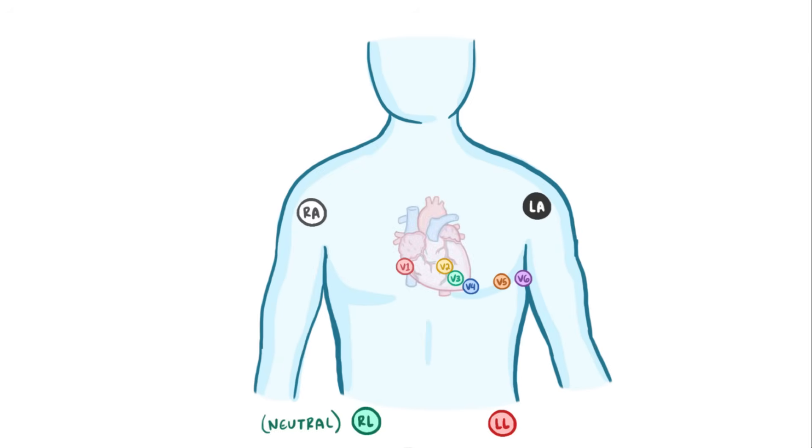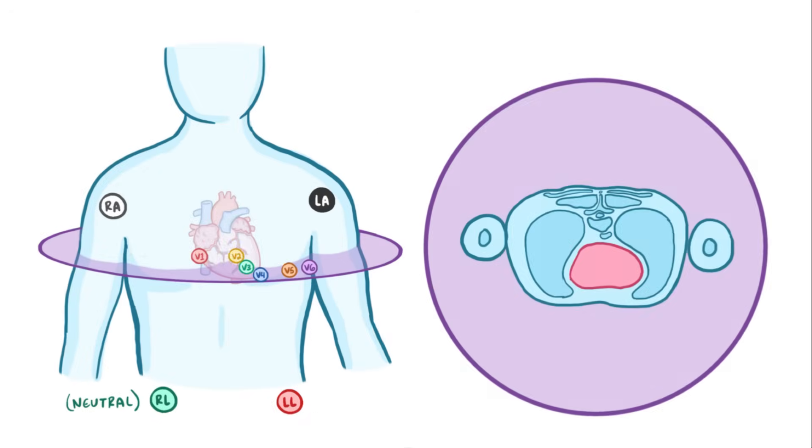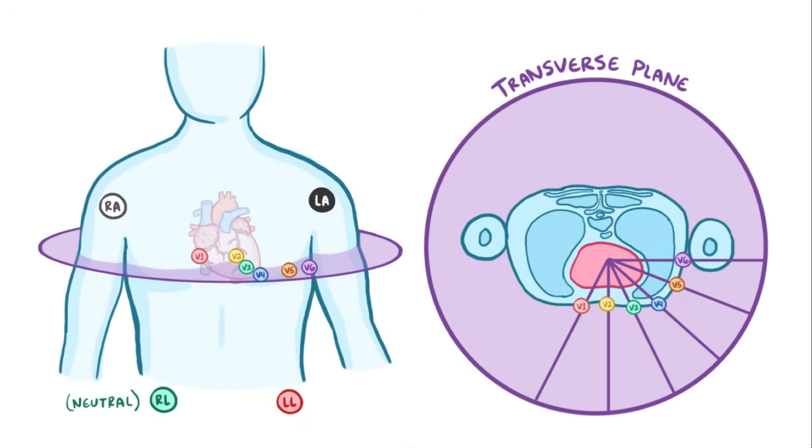Now, the heart's a three-dimensional organ, right? So V1 through V6 line up in the transverse or horizontal plane of the heart, and each electrode is set up to detect any wave of positive charge coming toward them, which based on what we know already means that they're positive. These are collectively called the chest leads.